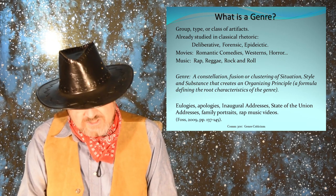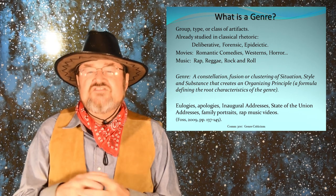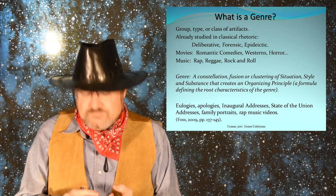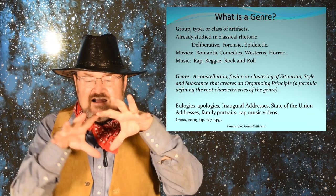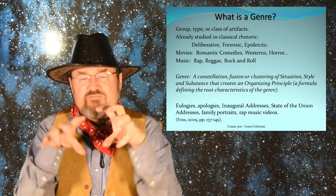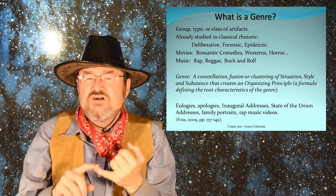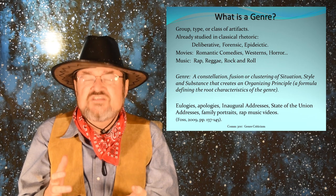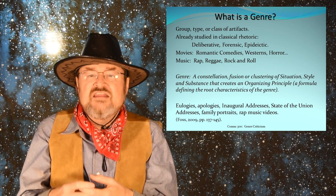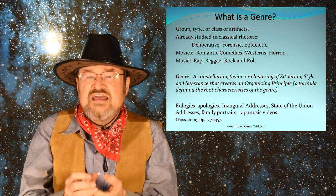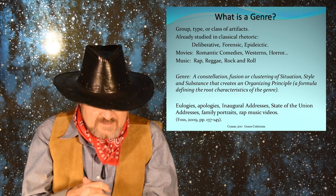Campbell and Jameson's definition of a genre is a constellation or fusion or clustering of situations, style, and substance. A constellation is kind of like an arrangement — a particular, unique, interesting arrangement of the situation. What is the rhetoric responding to? What's the situation that creates the genre? And then the style of the genre and the substance of the points being made in the rhetoric.